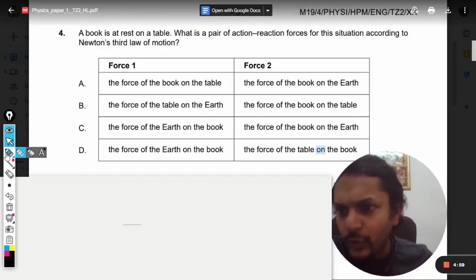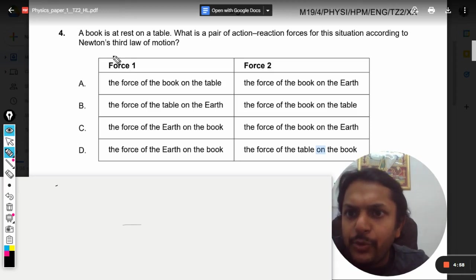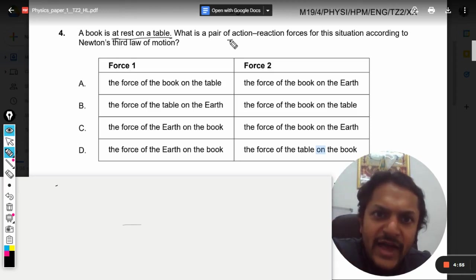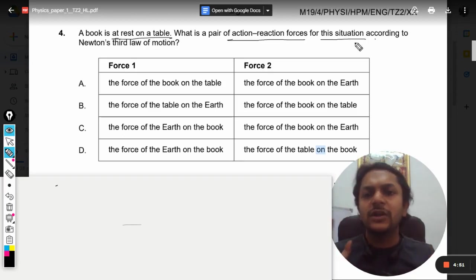Okay, so what is there in this question? A book is at rest on a table. What is a pair of action-reaction forces for this situation according to Newton's third law of motion? Now what is Newton's third law of motion?